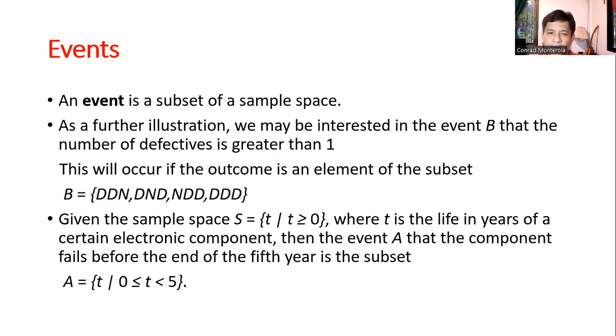Given that the sample space is T such that T is greater than zero, where T is the life in years of a certain electronic component. Then the event A that the component fails before the end of the fifth year is the subset A equals T such that time is greater than or equal to zero or less than five. Of course, there's no negative in the life in years of the electronic component. So I hope you can imagine what an event is. This is just a subset of a sample space.